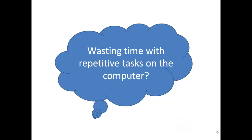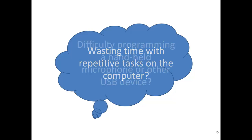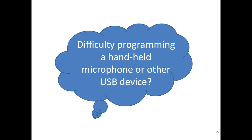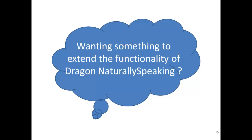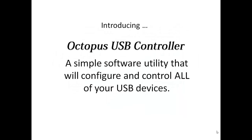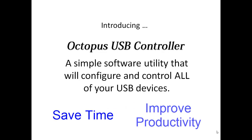Are you wasting valuable time navigating to the same applications, documents, and folders day after day on your computer? Do you own a handheld microphone with programmable buttons and find it almost impossible to program those buttons to do the things you want? Are you a user of Dragon NaturallySpeaking and wonder if something can extend its functionality? If the answer to any of those questions is yes, then you should know about Octopus USB Controller, also known as OUC — the simple software utility that allows you to configure and control all of your USB devices. In so doing, OUC will help you save time and improve your productivity.